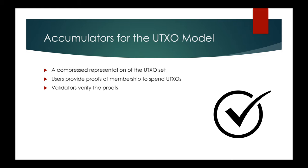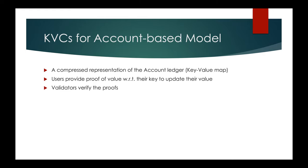Accumulators work really well for the UTXO model, giving a compressed representation for the entire UTXO set. Users can provide proofs of membership of their UTXOs in order to spend them and validators can verify these proofs. For the account-based model, a primitive that's better suited is a key value commitment, since the account ledger is indeed a key value map. Users can provide proofs with respect to their keys and values in order to update them — think of balances associated with accounts — and validators can verify these proofs.